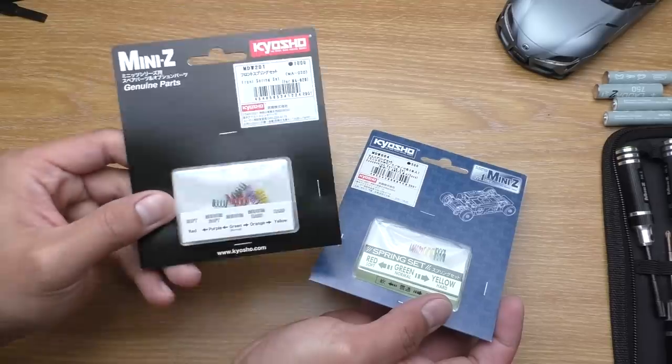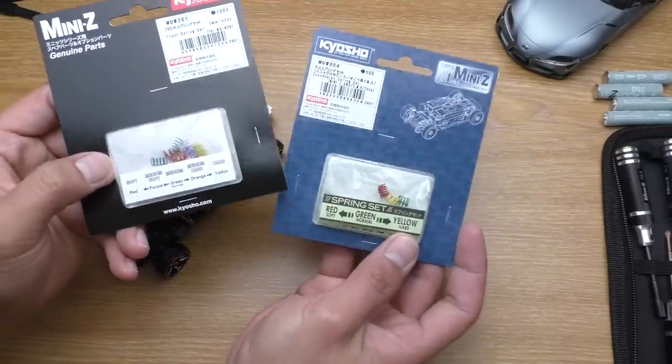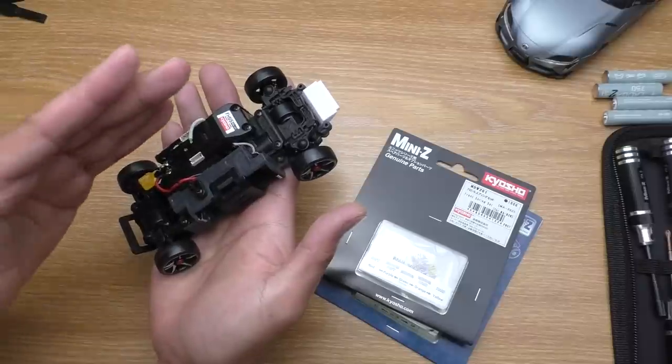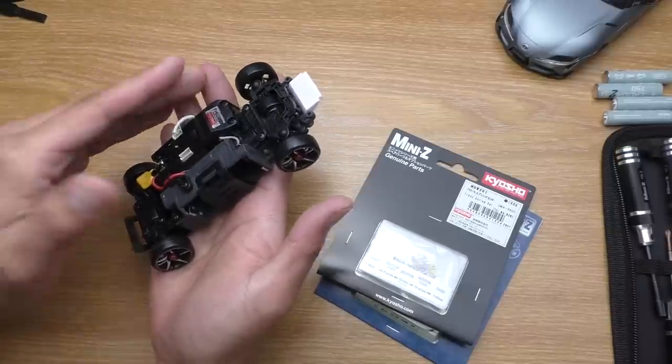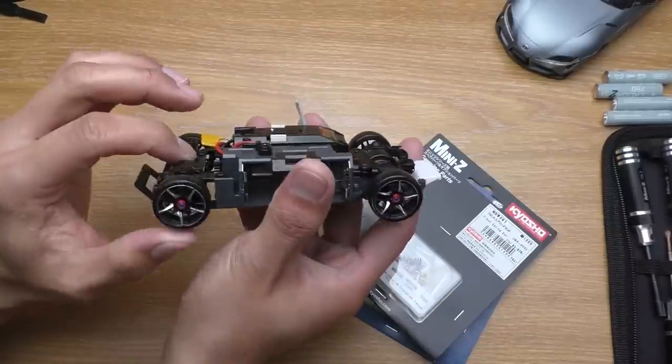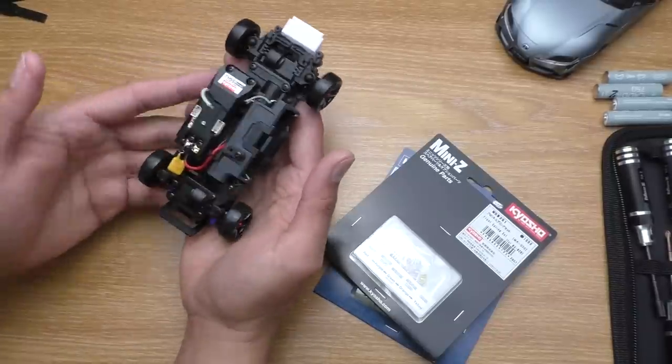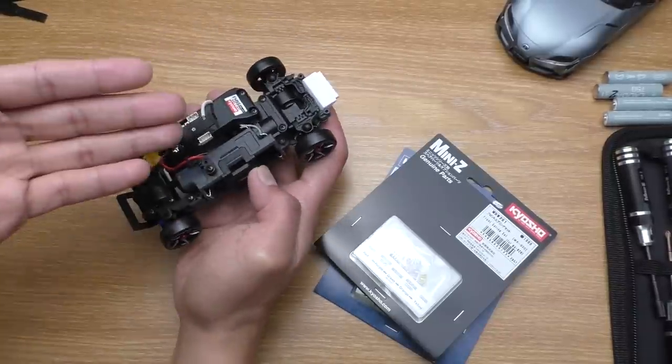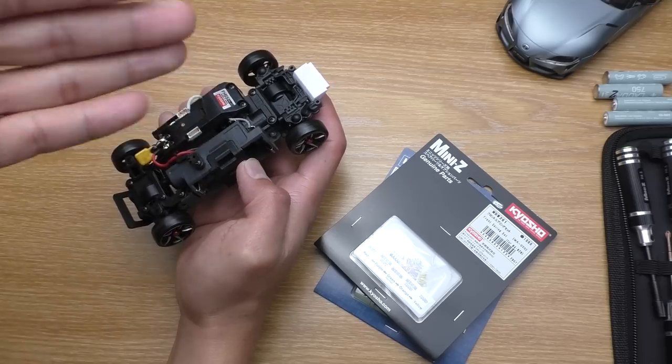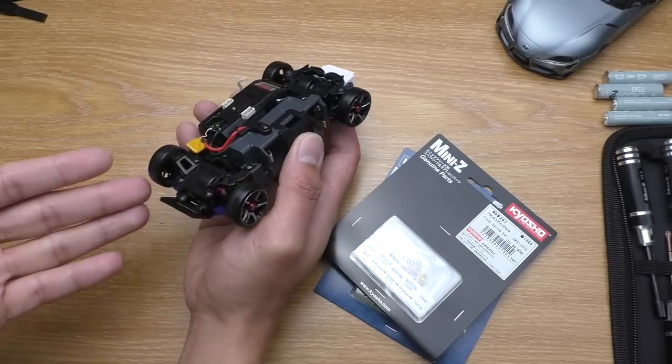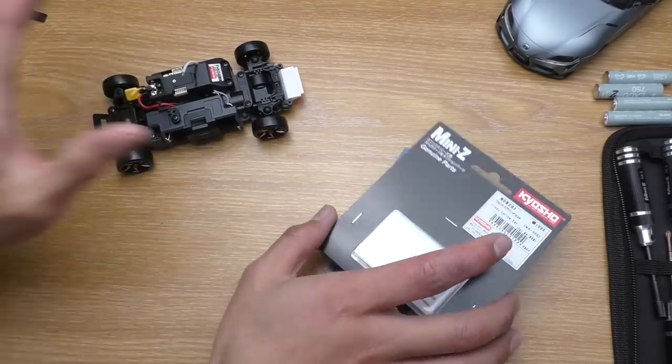The next thing I'm going to do is tune the springs. Here are the front springs and here are the rear springs. Out of the box, the setup has front hard springs and rear soft springs which will make it understeer. However, for drifting we want oversteer, so I'm going to put the soft springs at the front and hard springs at the back.